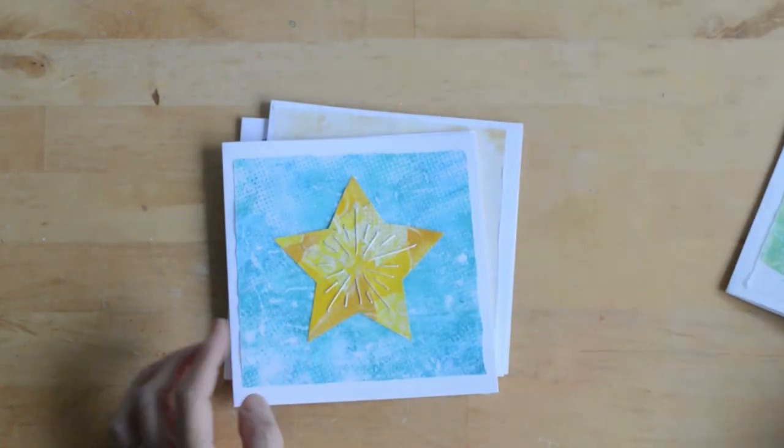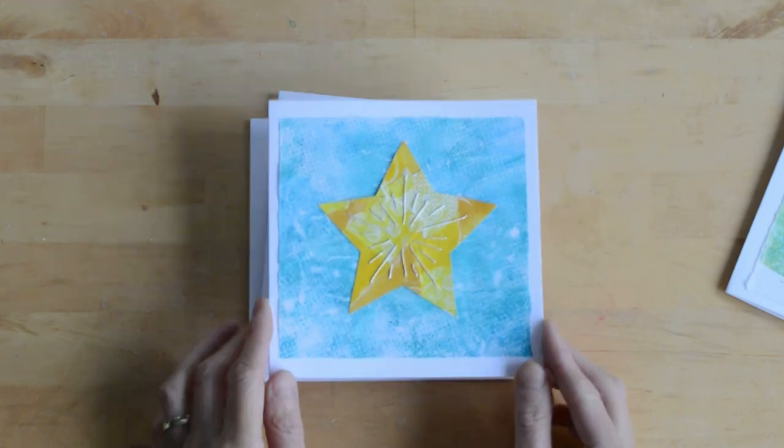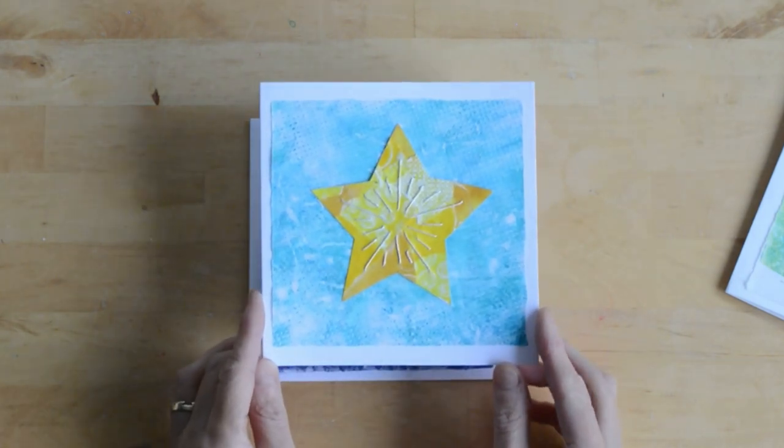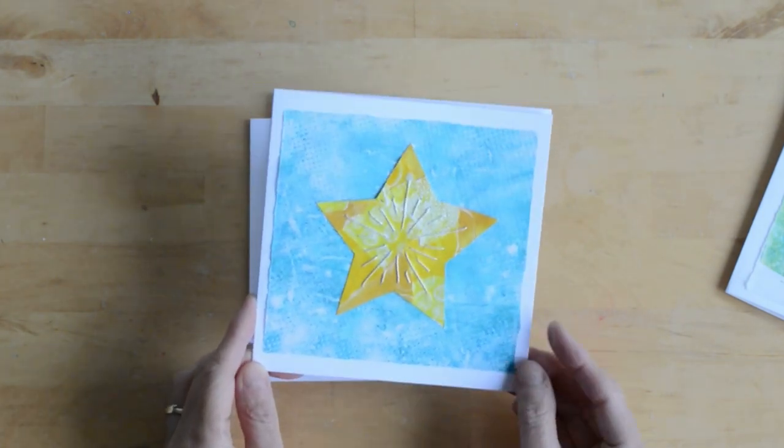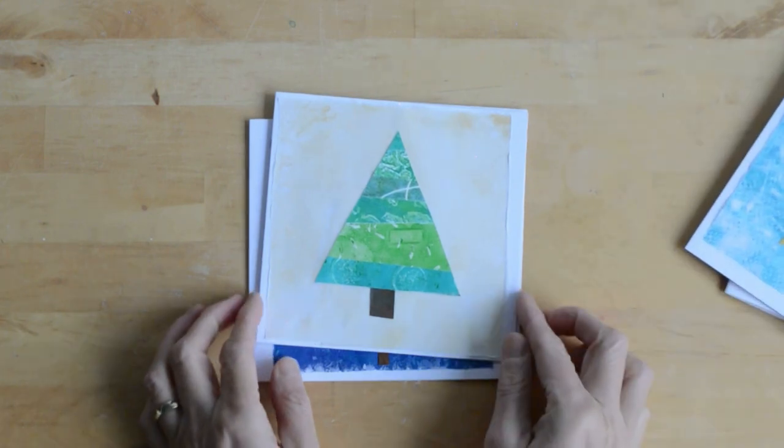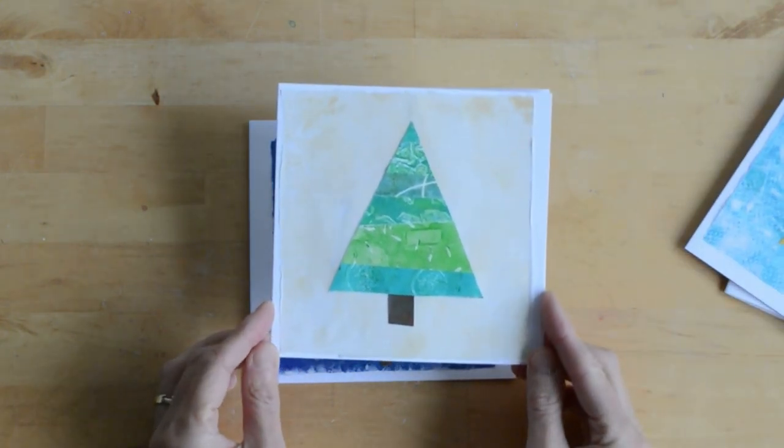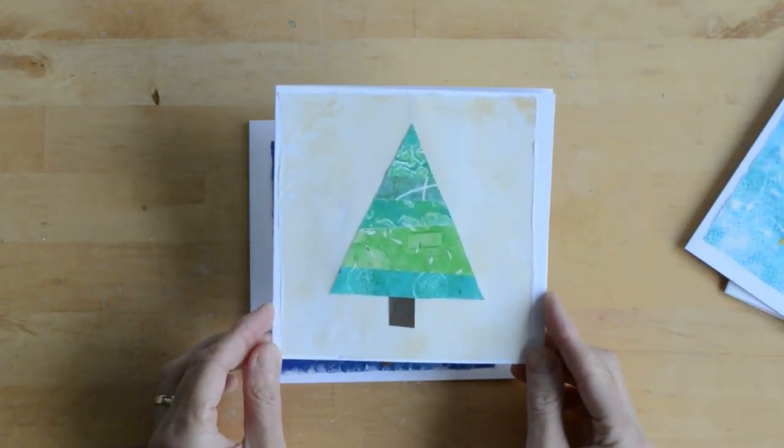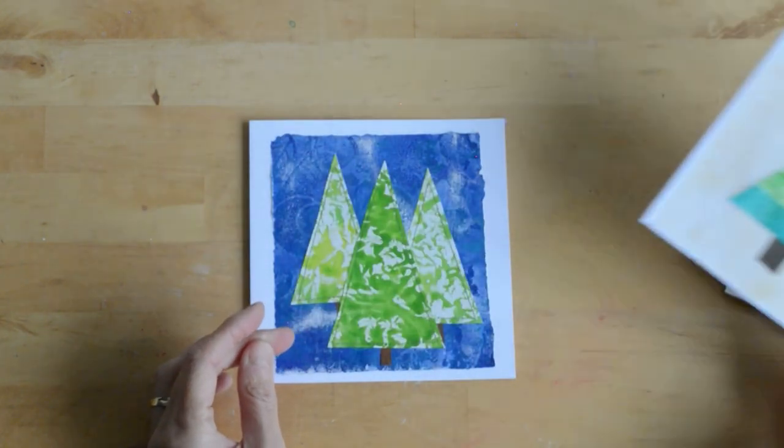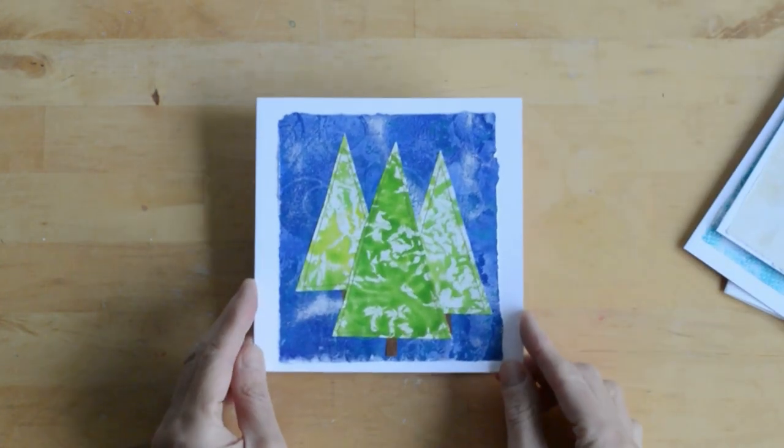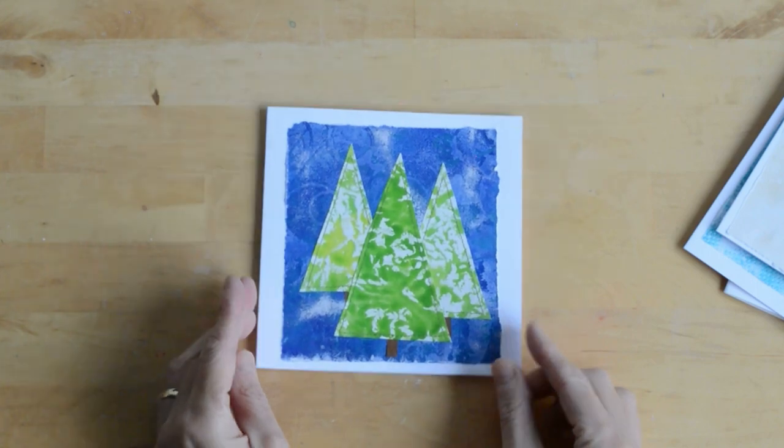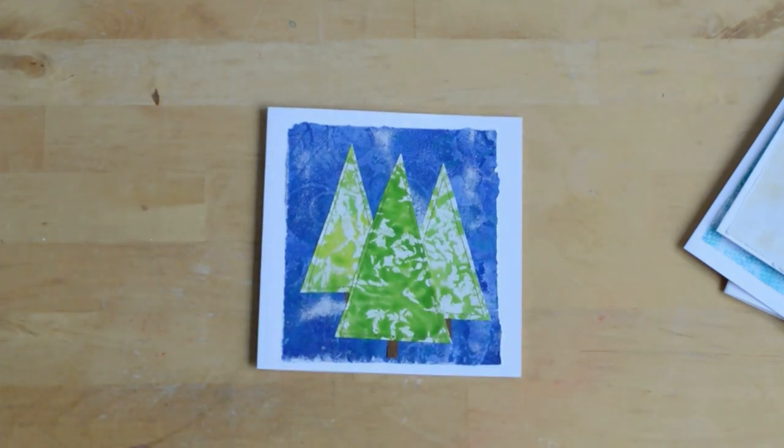This is a collage of different yellow papers, and then I've machine stitched into it. This is a collage of different green prints that I've cut into a triangular shape. And this is a simple plastic bag print, and then I've machine stitched around the triangles of the trees.